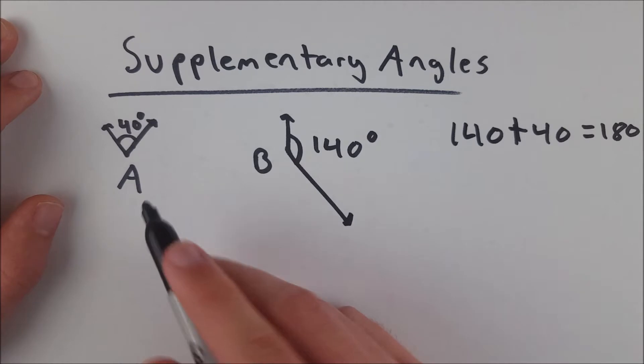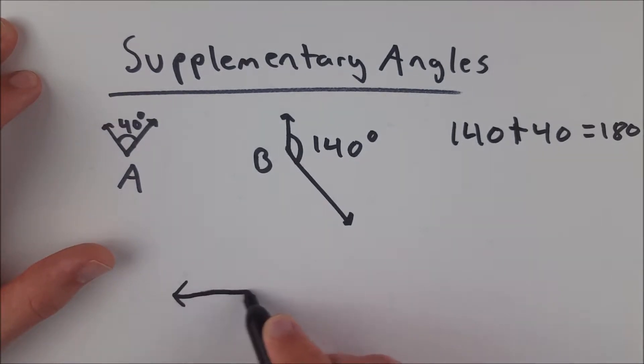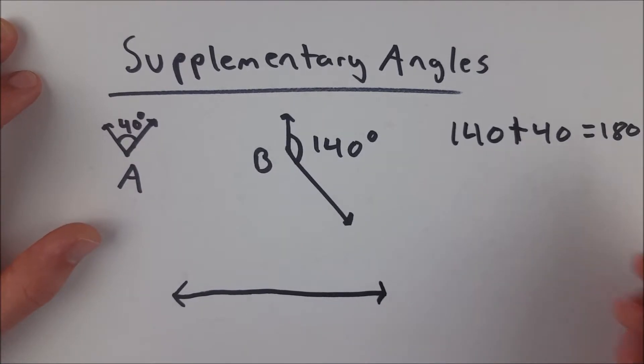So we know that B is supplementary to A. You'll often see supplementary angles drawn adjacent to each other, because it makes it very clear that they form a 180 degree angle, like this one here.